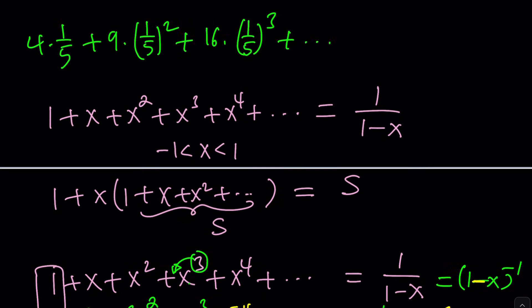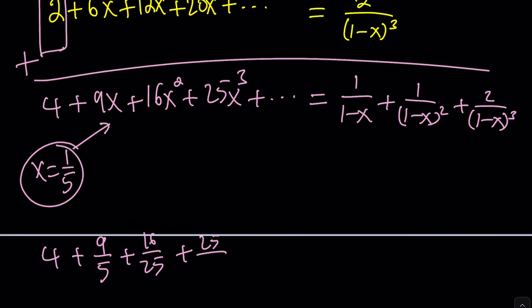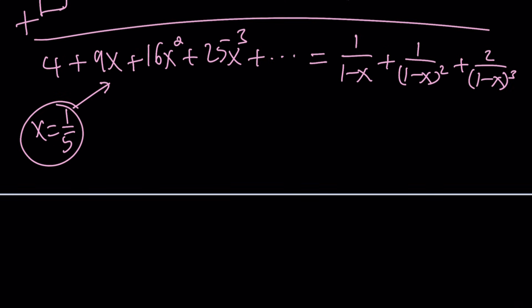All right. So never mind. I messed up. I think... Hmm. Oh, yes. I know what we're going to do. We're not just going to plug in 1 over 5. Of course, we have to do a little bit more work. And here's how it works. We're going to go ahead and... Since our first term needs to be 4 over 5, we should have an x here. Make sense? So we're going to multiply everything by x.